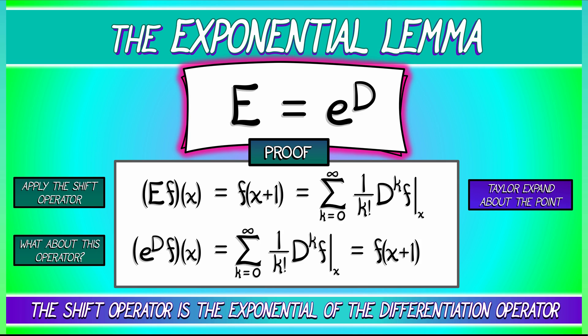Does it depend on the function f? No. Does it depend on the evaluation point x? Also no. We have two operators that do the exact same thing. What does that mean? That means they're the same operator. The shift operator is the exponential of the differentiation operator. The differentiation operator is, if you like, the natural log of the shift operator.